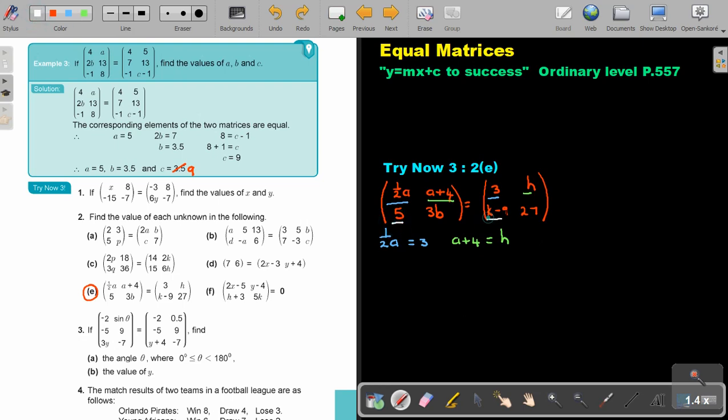5 will be equal to K minus 9. And then let's do the last one, 3B will be equal to 27.